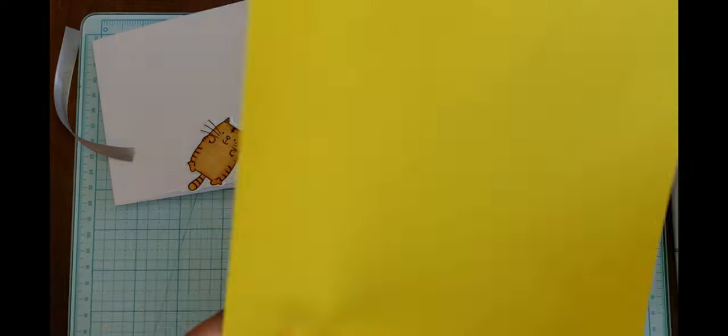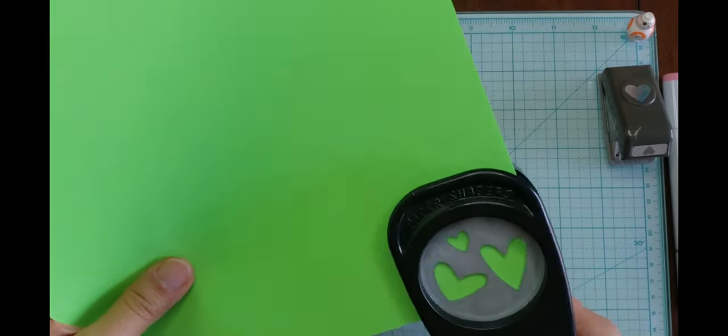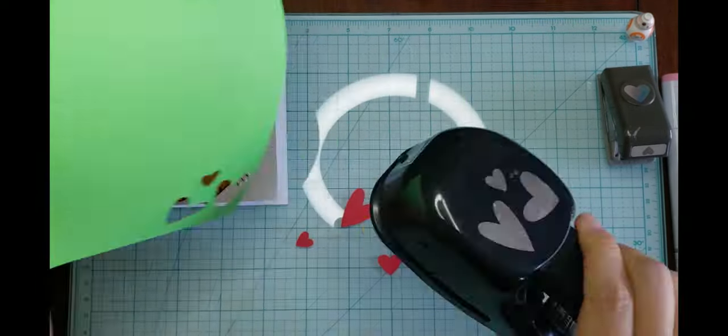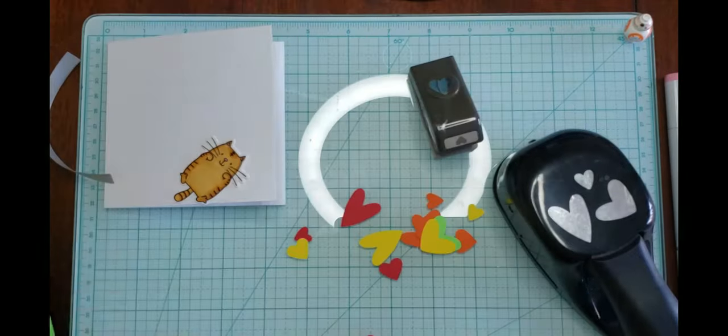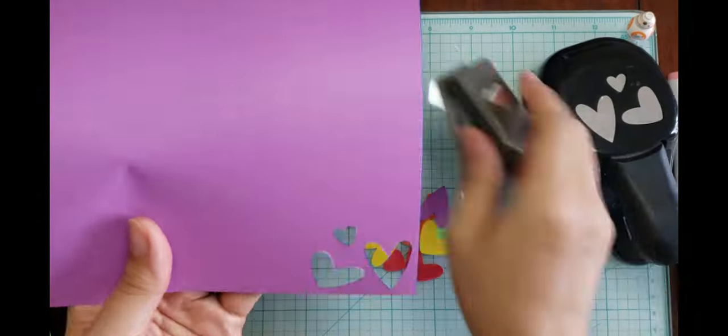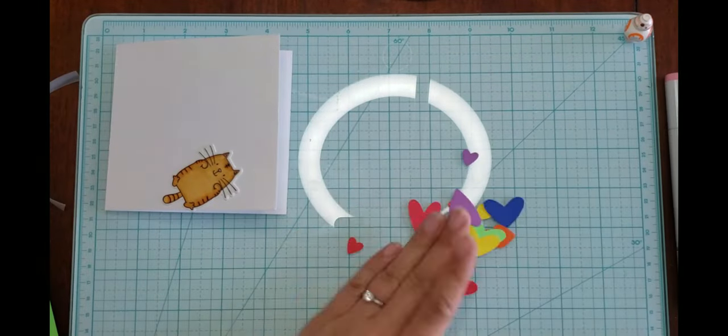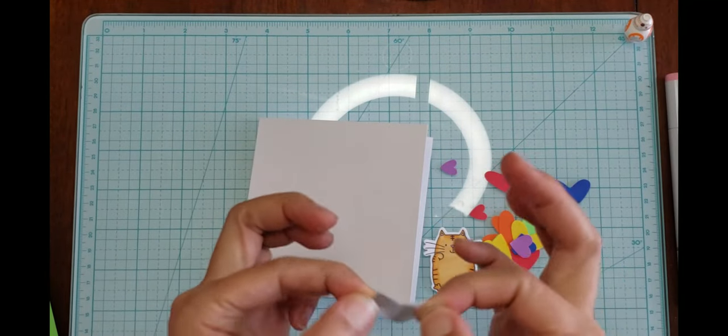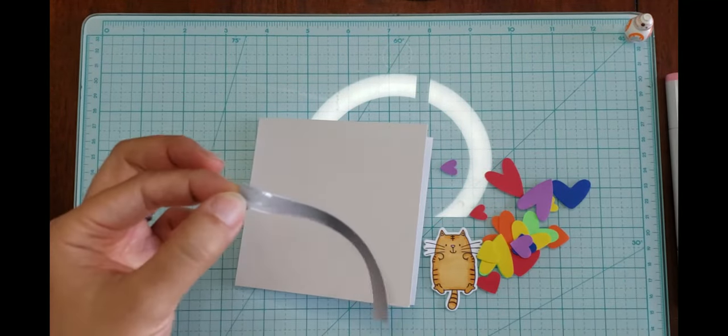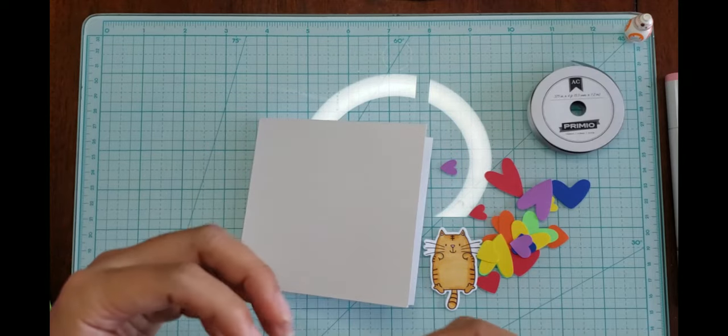If you don't have a heart punch, you can draw and cut out your hearts with scissors or use any other shaped punch you have. I found some lightweight colored paper at Staples called Astrobrights. They are 24 pound and I was able to punch them two at a time.